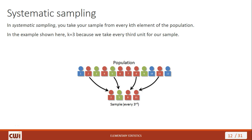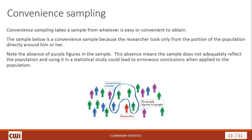In systematic sampling, you take your sample from every kth element of the population. Here we have an example where we're taking every third unit, starting with number two. From our twelve people numbered one through twelve, we start with number two, then count three after that to get five, then eight, then eleven. That's systematic sampling — every kth element or unit from the population determines your sample.